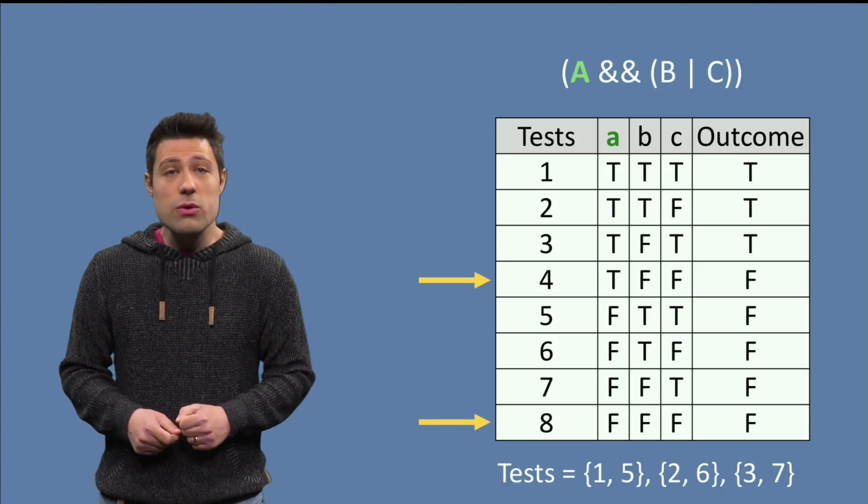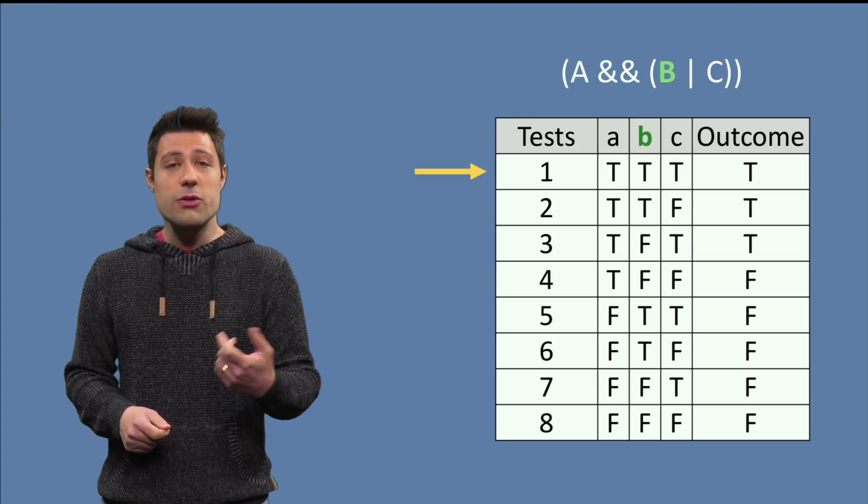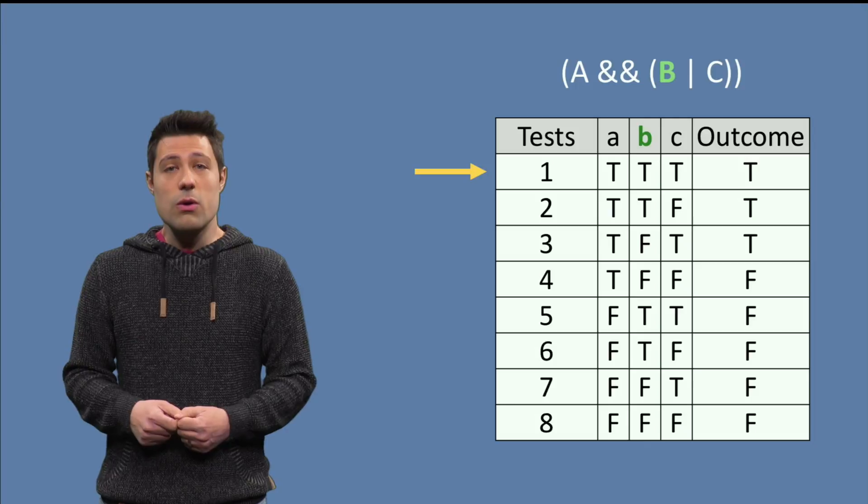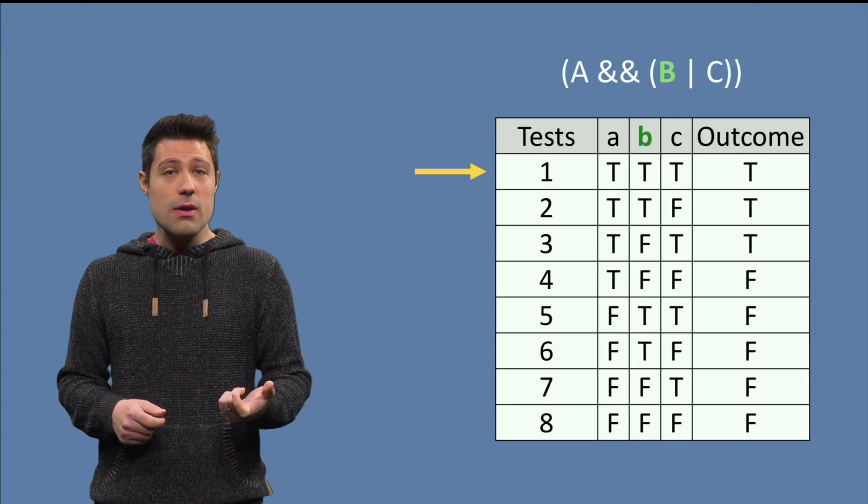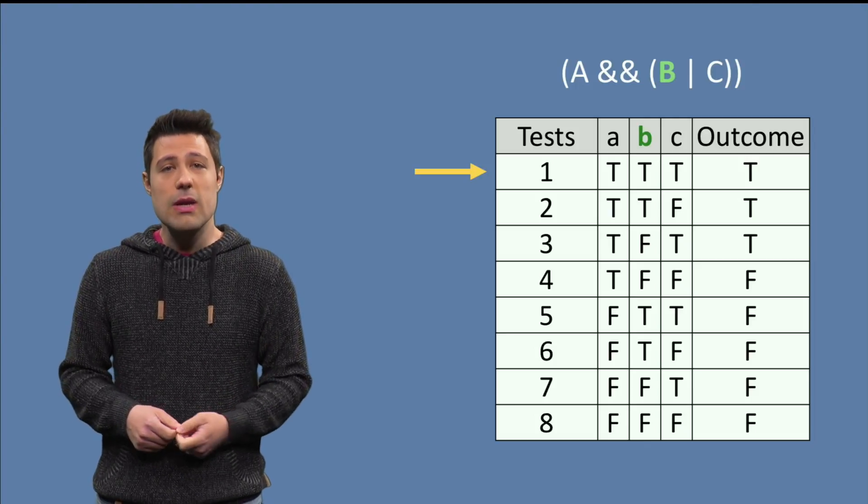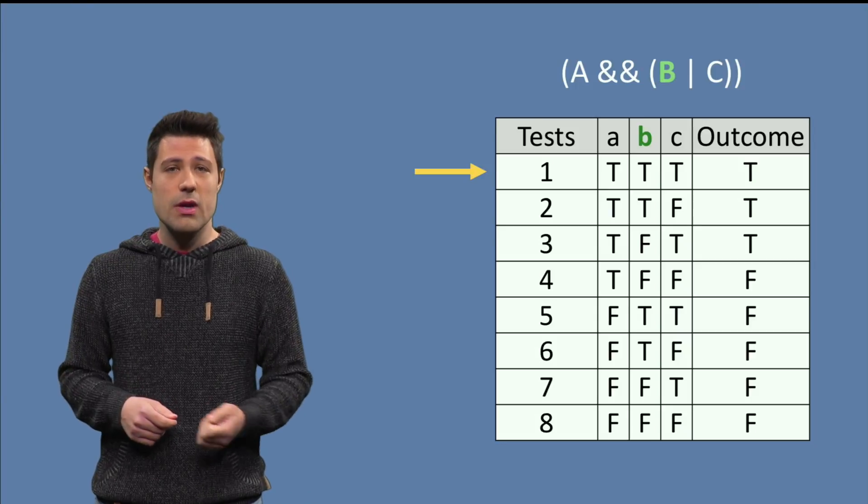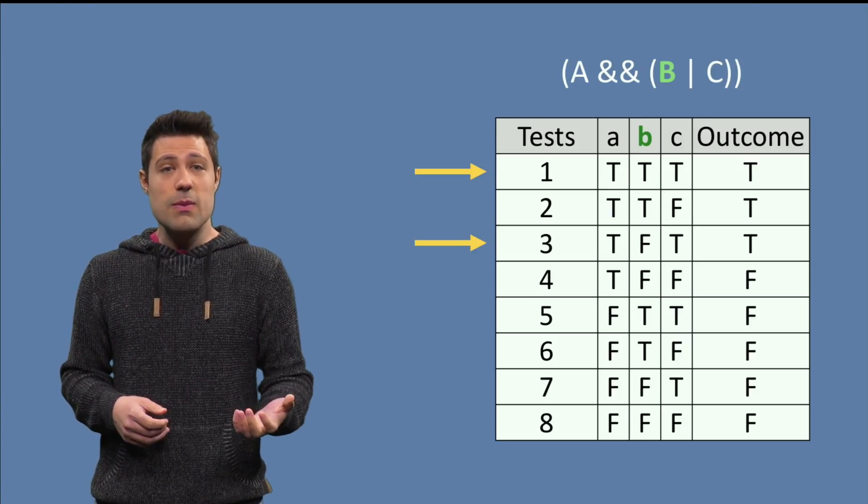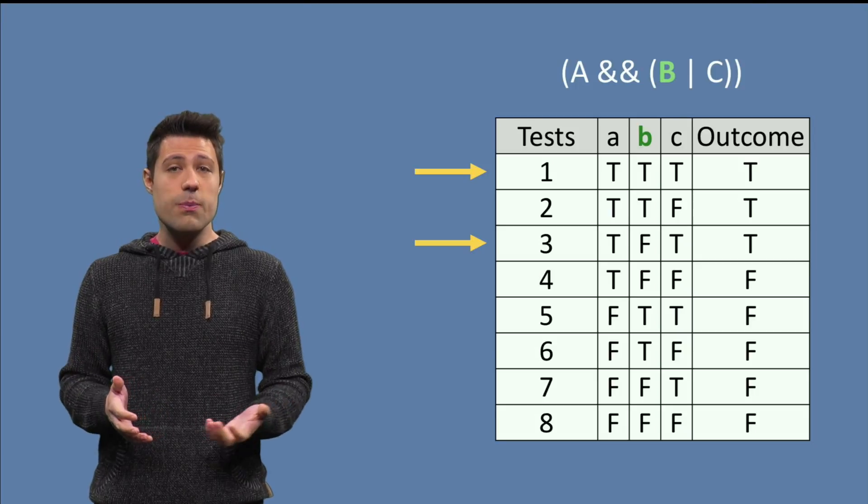Okay, let's go to condition B now. First row, B true, outcome true. Now, we find the row where all the conditions are the same, but B is flipped, meaning true, false, true, which happens in row 3. As the outcome is the same, test 1 and 3 are not that important for B.